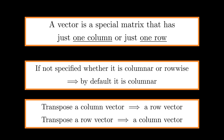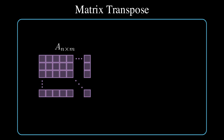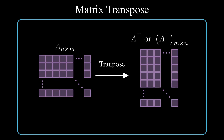We can convert a column vector to a row vector or a row vector to a column vector using the transpose operation. The transpose operation is a linear transformation that flips a matrix over its diagonal. For example, if we have matrix A with size n by m — meaning n rows and m columns — then transposing matrix A gives a new matrix with size m by n, represented using the transpose symbol in the superscript. Let's see some examples of matrices and vectors and transpose them.